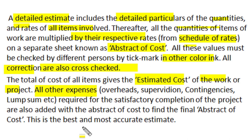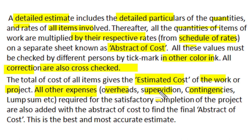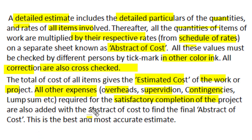All other expenses such as overheads, supervision, contingency, or lump sums are also added in this estimated cost as per the decided percentage required for satisfactory completion of the project. These other expenses — overhead, supervision, contingencies, and lump sums — are added with the abstract of cost, and a final abstract of cost is prepared.